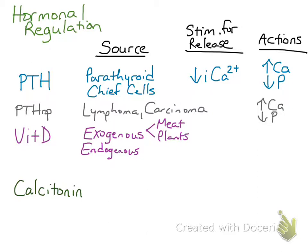The main organ where we see disease and therefore dysregulation of vitamin D is the kidney, because the kidneys are responsible for converting vitamin D into its most metabolically active form. So, if you have chronic renal failure, you could potentially get low vitamin D and therefore low calcium. The stimulus for production and release of vitamin D is a low ionized calcium, and the net actions are to increase both calcium and phosphorus concentrations in blood.